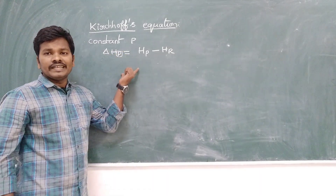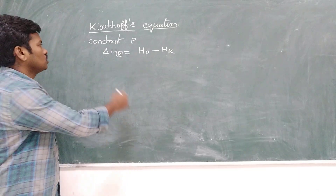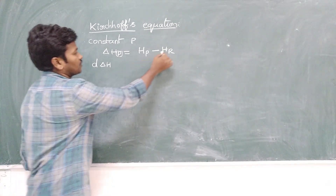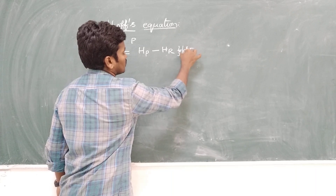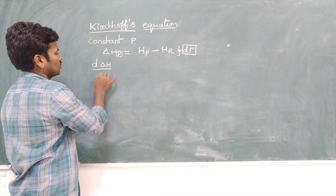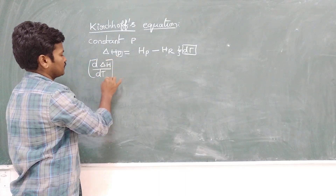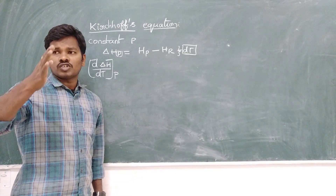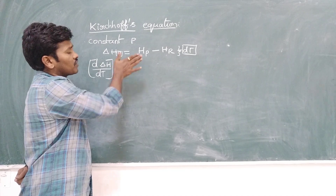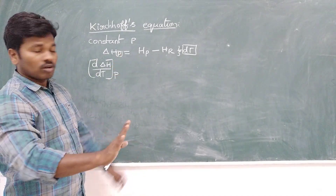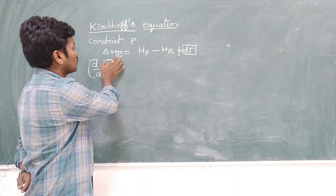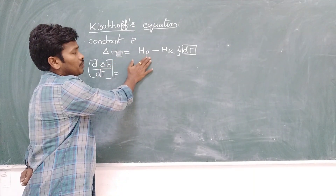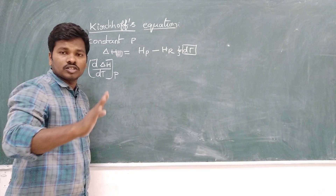Now differentiate the above equation with respect to temperature T at constant pressure. To summarize: we took one chemical reaction, computed the difference in enthalpy changes at constant pressure, and defined that as ΔH. So ΔH equals the enthalpy of the products minus the enthalpy of the reactants at constant pressure. That is the first step.